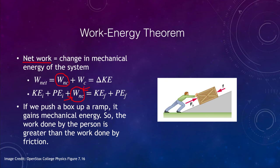Let's look at an example where we're pushing a box up a ramp — it is gaining mechanical energy, getting higher up. The force the person is exerting has to be greater than the frictional force, so there must be a net force moving it up the ramp. If the frictional force were greater, the box would not move. So we know the work done by the person is greater than the work done by friction.